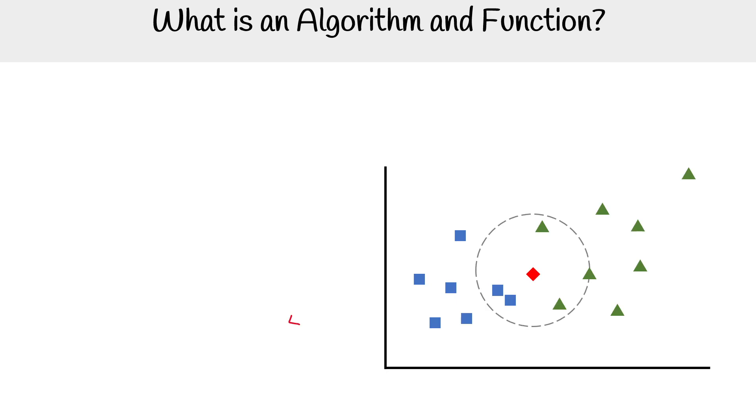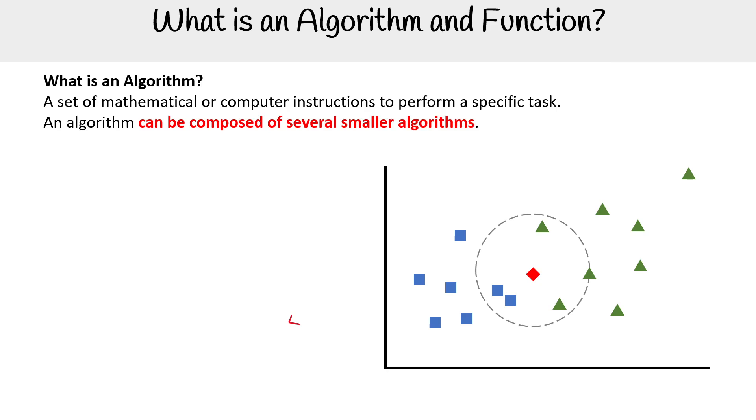Let's define an algorithm and a function. So an algorithm is a set of mathematical or computer instructions to perform a specific task. And an algorithm can be composed of several smaller algorithms.